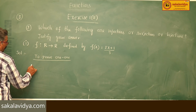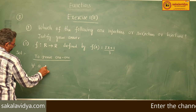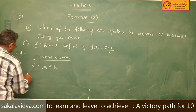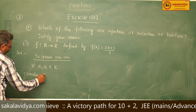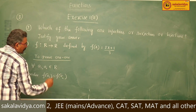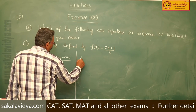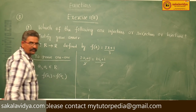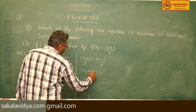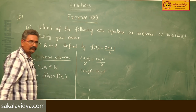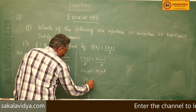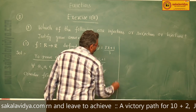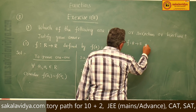For every a₁, a₂ belonging to R, consider f(a₁) = f(a₂). Then (2a₁ + 1)/3 = (2a₂ + 1)/3. The 3s cancel, giving 2a₁ = 2a₂, and the 2s cancel, so a₁ = a₂. Therefore, f: R → R is one-to-one.